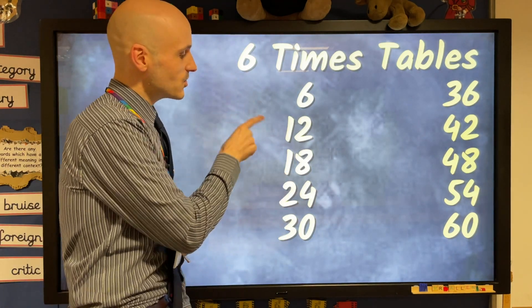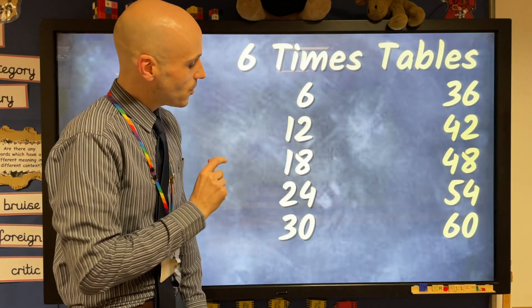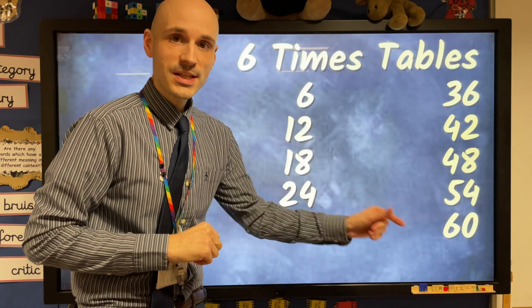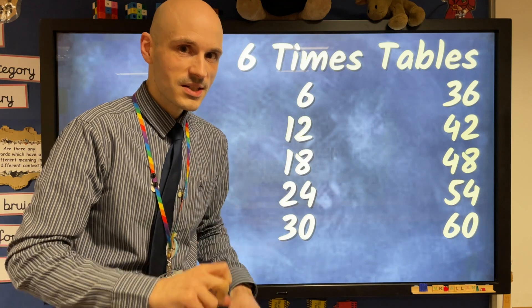Here we go 6 12 18 24 30 36 42 48 54 60 see if you can give it a go we'll go a little bit slower this time.